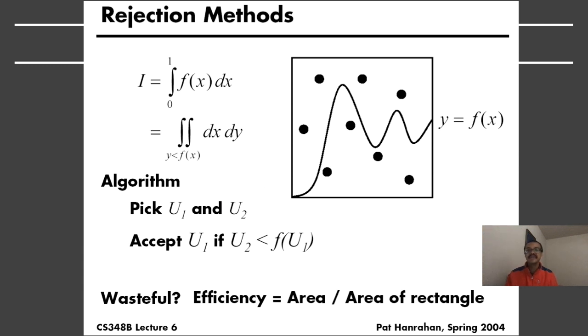Now, of course, this can be a wasteful operation because you are generating many more samples than you accept, and the efficiency is determined by the area under the curve divided by the total area of the rectangle.